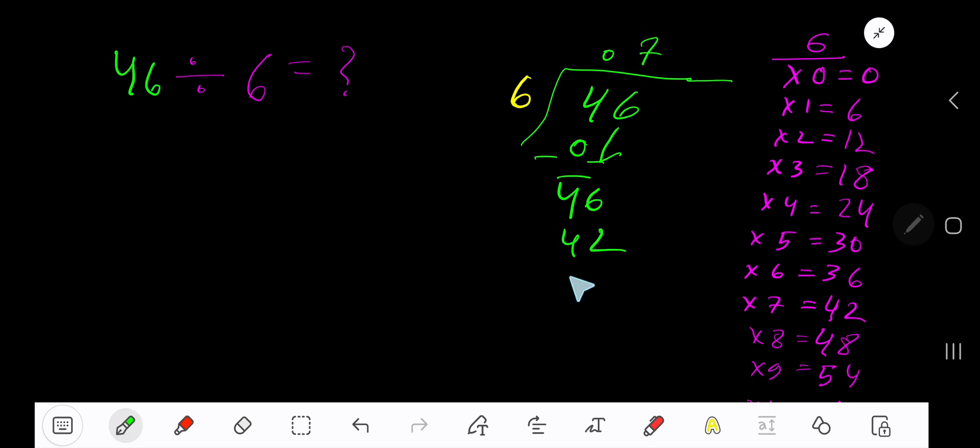Subtract, you are getting 4. So our answer is 07, which means 7 remainder 4. If you want to write your answer in decimal form, then take your decimal, add number of zeros, bring down the fresh zero. Before the zero there is a decimal. Decimal must come to the quotient directly.